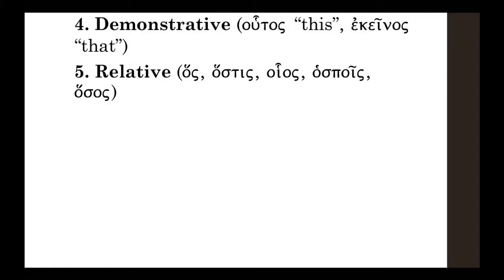We also have demonstrative pronouns: houtos is near — 'this'; ekeinos is remote — 'that, over there.' Then relative pronouns: has and hostis. Interestingly, our articles were actually demonstrative pronouns originally, so they can be translated as relatives — 'which.' In Philippians 3:9 tain is translated 'which is through faith in Christ' — it's an article functioning as a relative. The article can also be used as a possessive pronoun — in 1 Timothy, 'they shipwrecked their faith,' where it's an articular form.